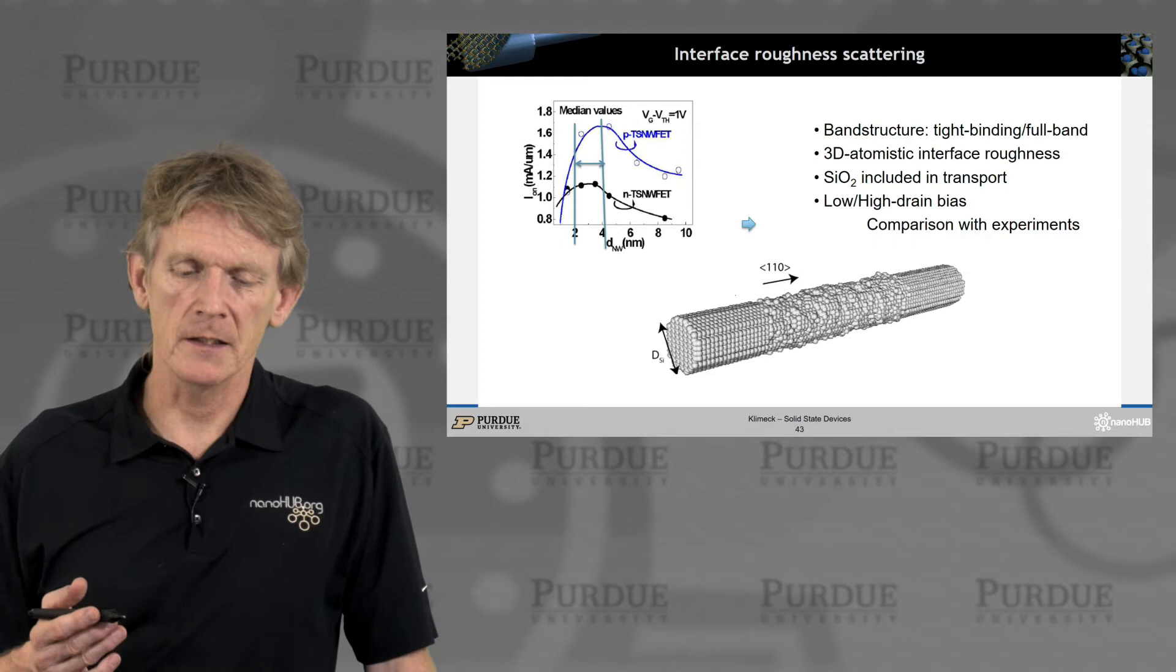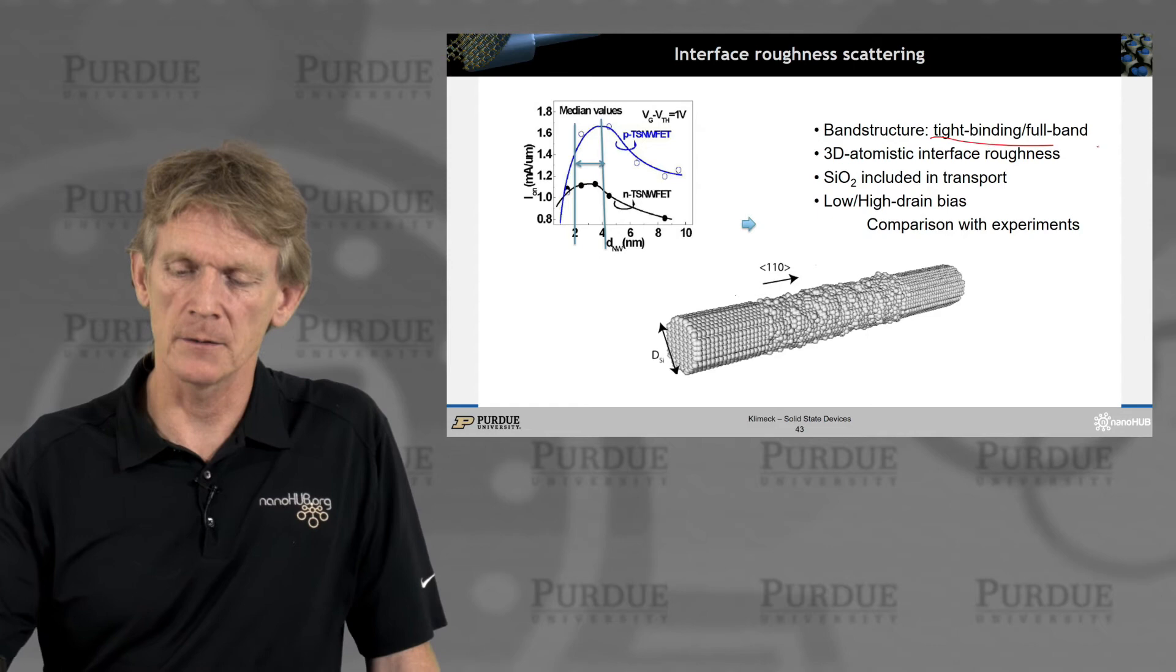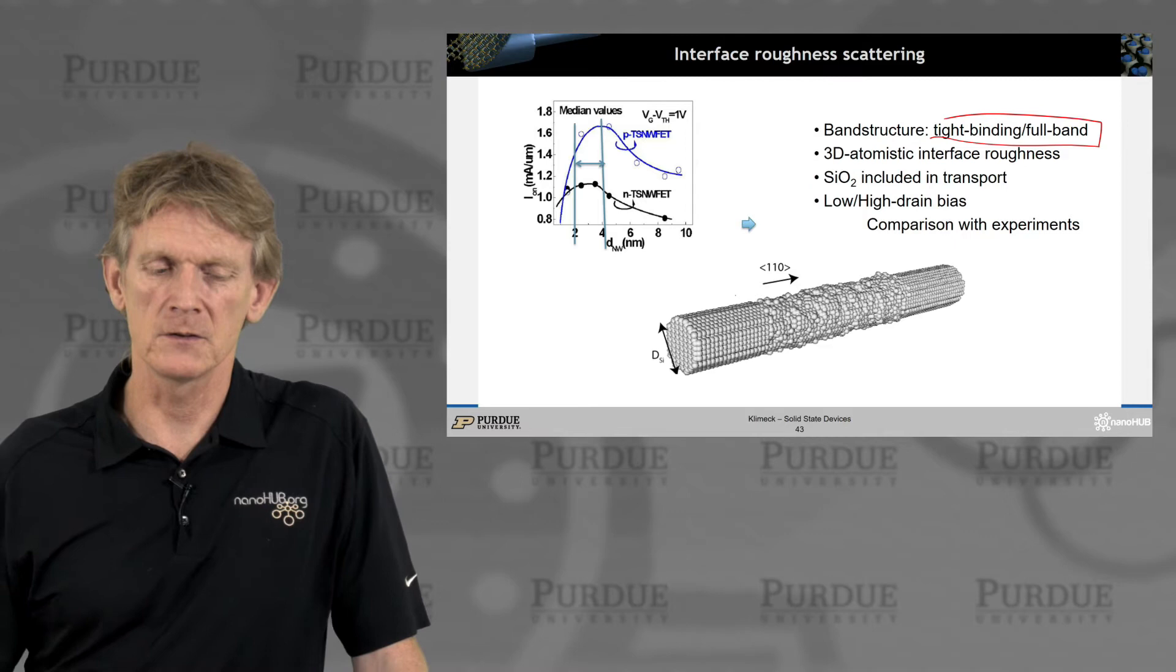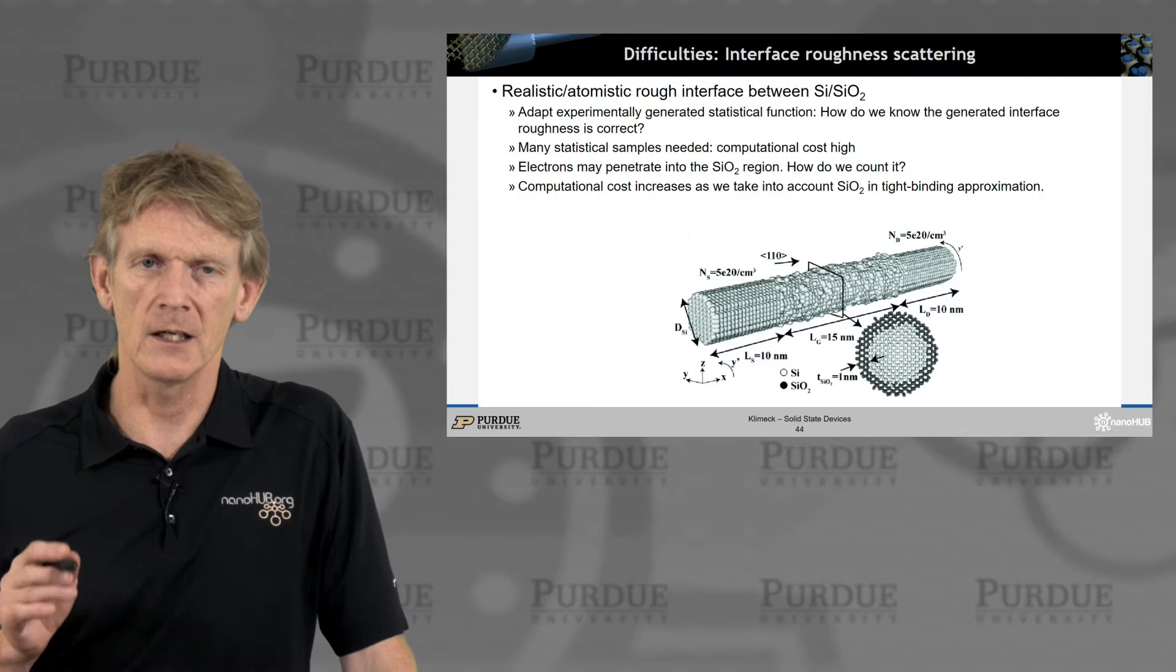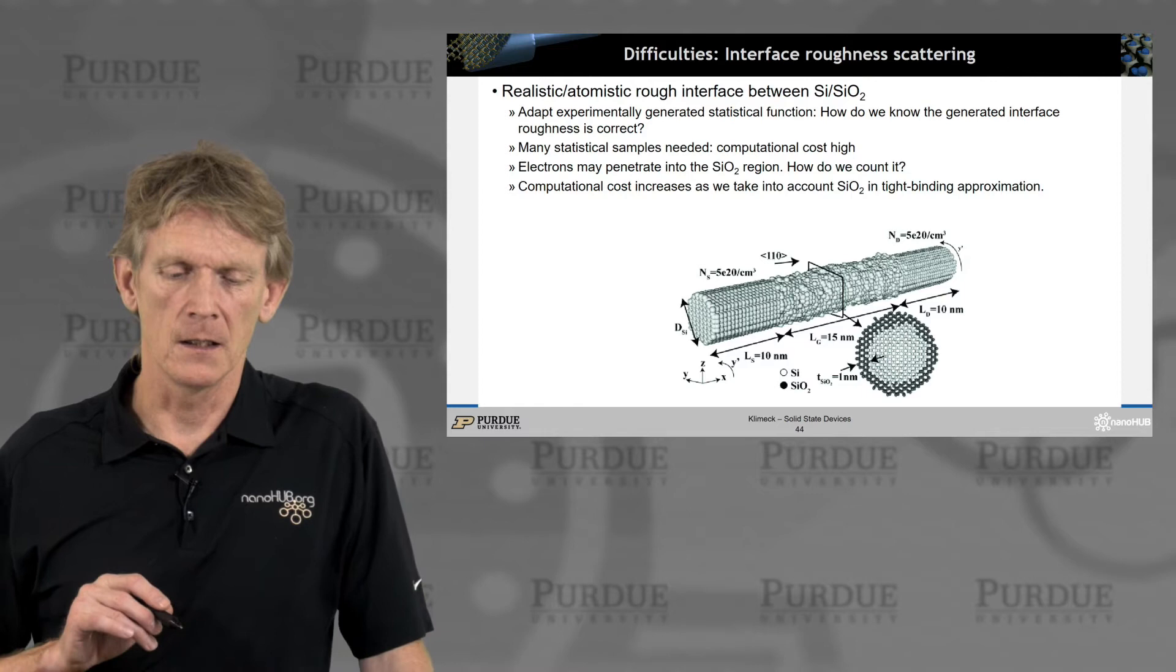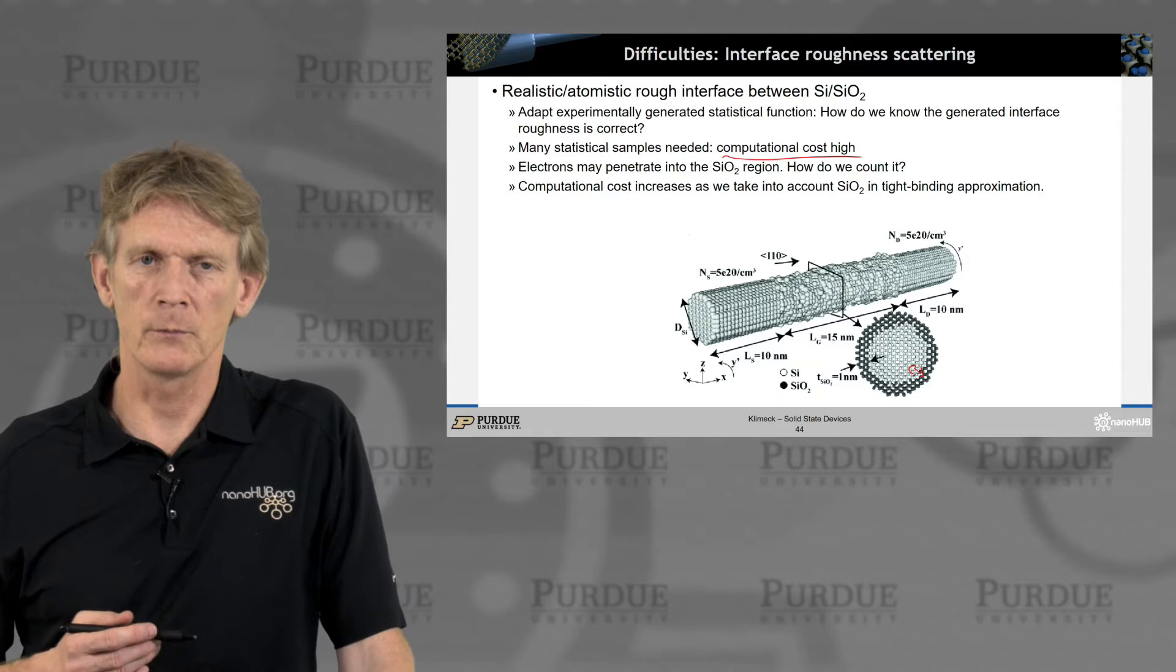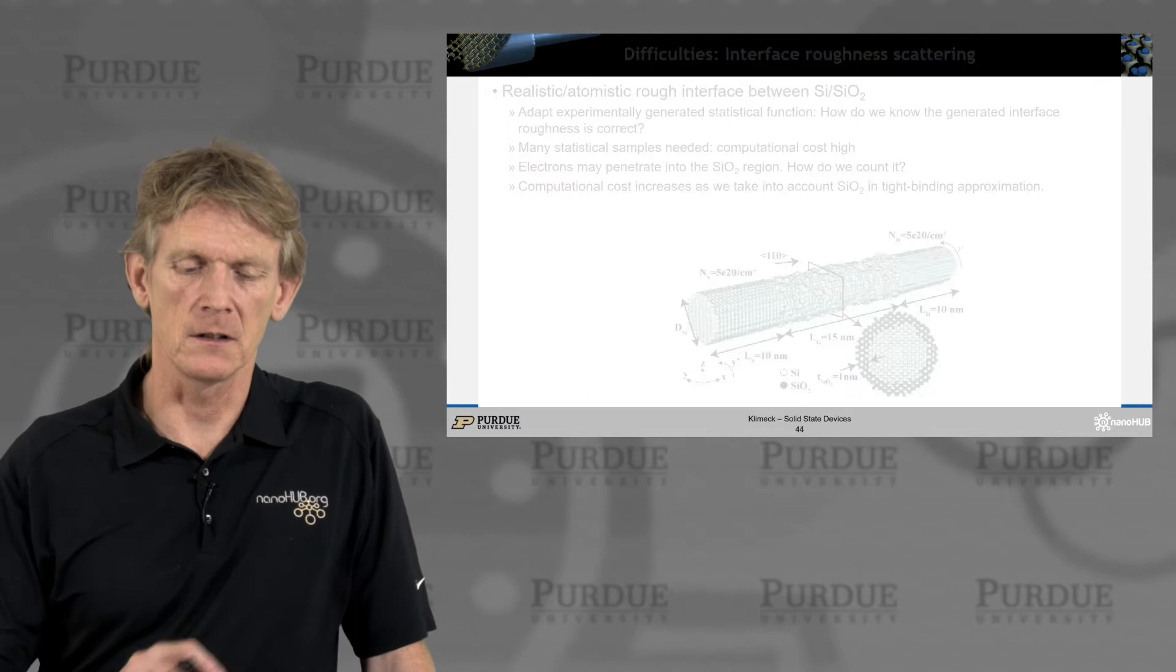So we've worked on this quite a while ago now, and we associate this due to interface roughness scattering. And here is an atomistic representation of such a device where we had a full band, tight binding atomistic simulation in 3D. We included the silicon dioxide in the simulation and compared our simulation results with experiment. And we had to run many simulations, right? Because this is like taking statistical samples, each device looks slightly different. And so you take multiple samples, so the computational cost can be pretty high. The electrons can penetrate into this oxide region, so they can tunnel in there. So we accounted for that by including that in the transport domain.